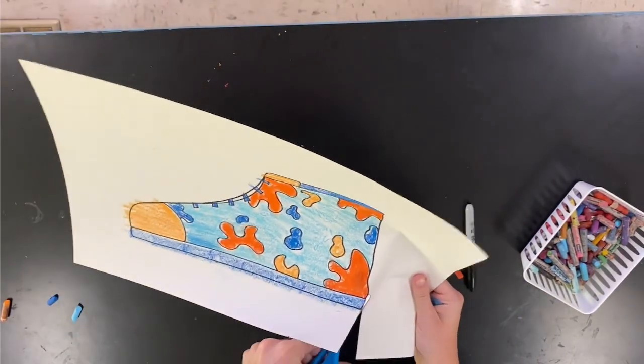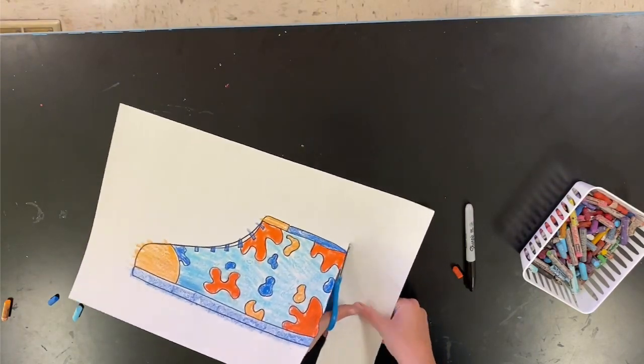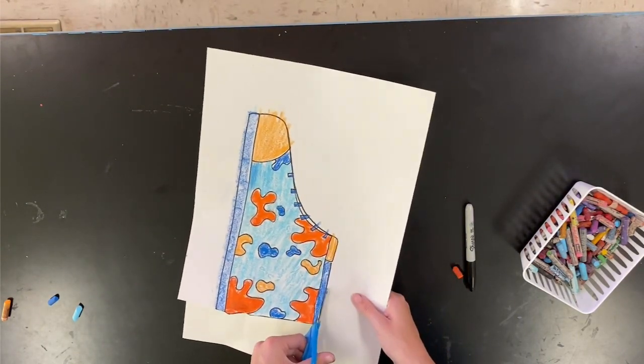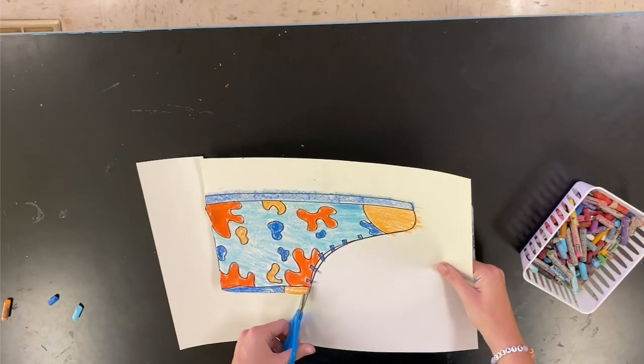So once my shoe is completely colored I'm going to cut it out along the black lines on the outside. And I don't want any white showing on the edge. So trying to stay on that sharpie line going all the way around my shoe.